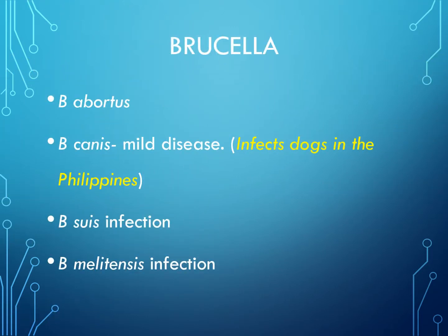Different species of Brucella include: Brucella abortus, which causes mild disease without suppurative complications and non-caseating granulomas of the reticuloendothelial system; Brucella canis, which causes mild disease and usually infects dogs; Brucella suis, which in the Philippines can present as chronic infection with suppurative lesions and caseating granulomas; and Brucella melitensis, which tends to have a more acute and severe manifestation.